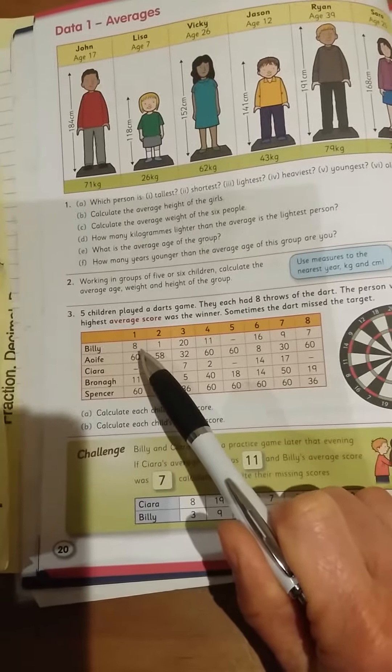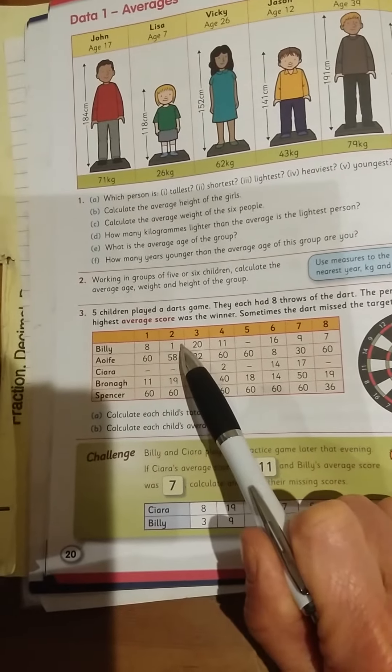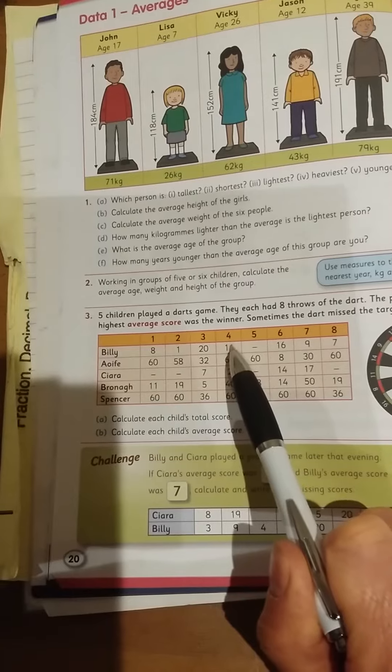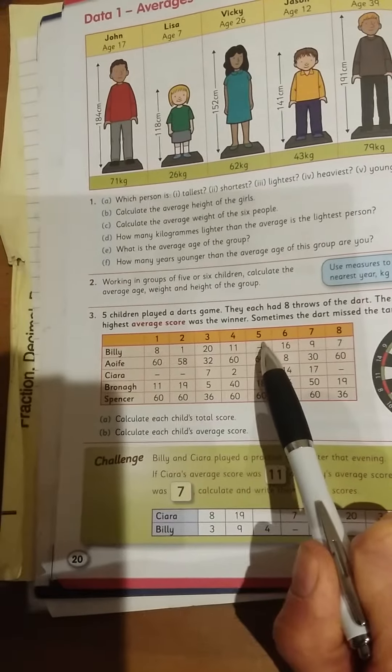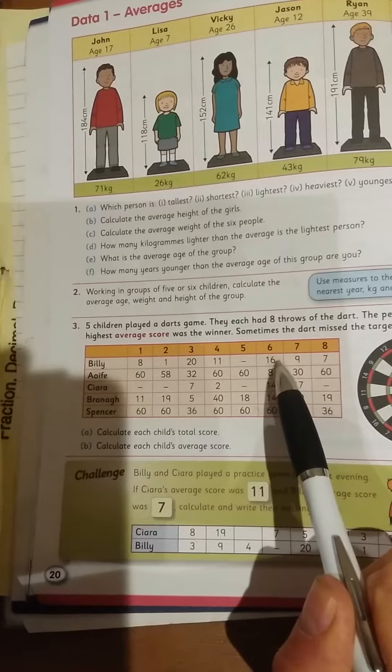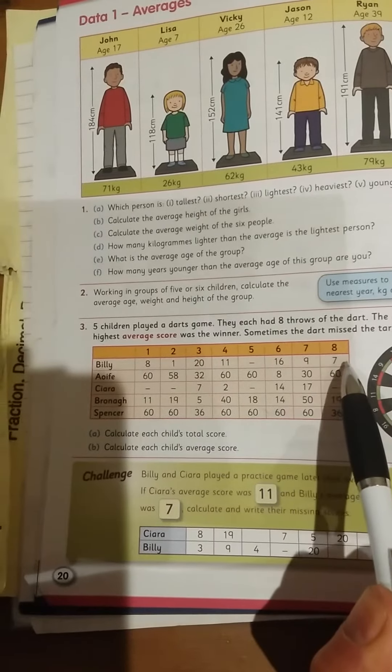So Billy in his first throw, he got 8. In his second throw, he got 1. In his next throw, he got 20. Next throw, he got 11. Next throw, he missed the board altogether, so he gets nothing for that. Then he got 16, then he got 9, then he got 7.